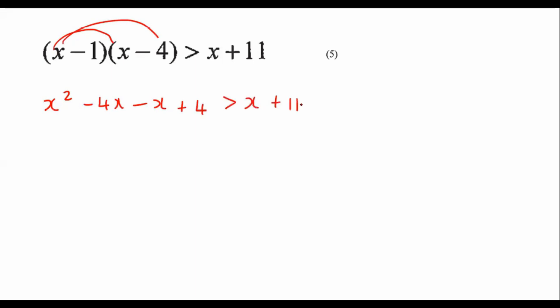Then what you do is you take everything to the one side. And so that would give us x squared minus 5x minus x minus 7 bigger than 0. I just did that all in one step.